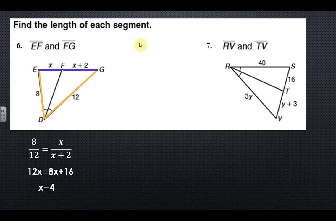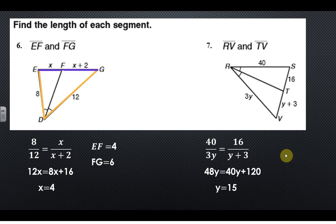Over on the right, number 7, again we have, oh sorry, and they wanted more here. Always go back and check what they wanted: EF and FG, so you would substitute 4 in. Over here, 40 over 3y is equal to 16 over y plus 3. Again, you can set it up a couple different ways, I just wanted to show that. And then we cross multiply, do our thing. They want RV and TV, so I substitute those values back in.